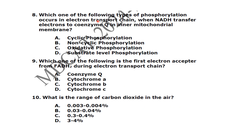Which one of the following types of photophosphorylation occurs in the electron transport chain when NADH transports electrons to coenzyme Q in the inner mitochondrial membrane? It is oxidative phosphorylation. Which is the first electron carrier from FADH2 during the electron transport chain? It is coenzyme Q.